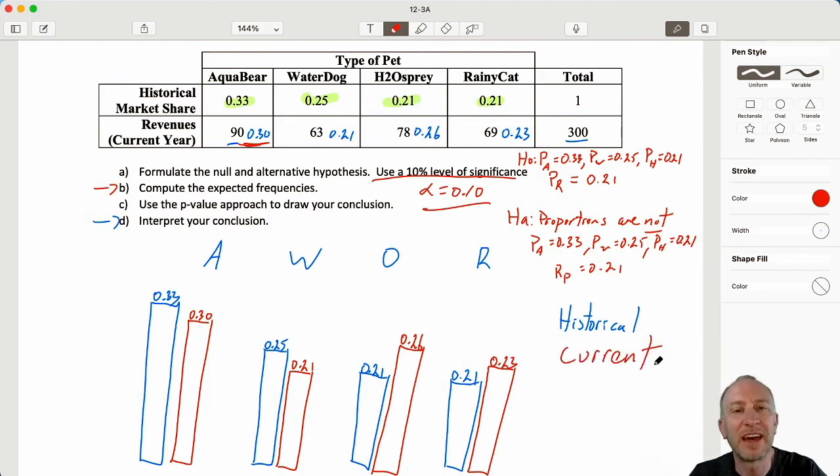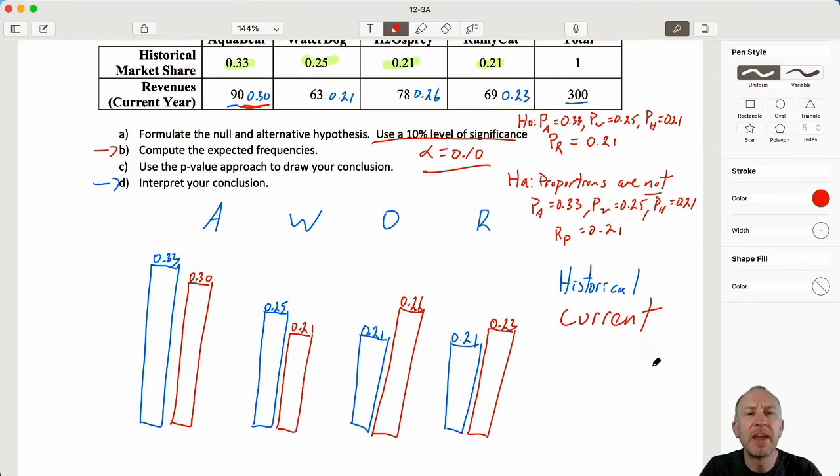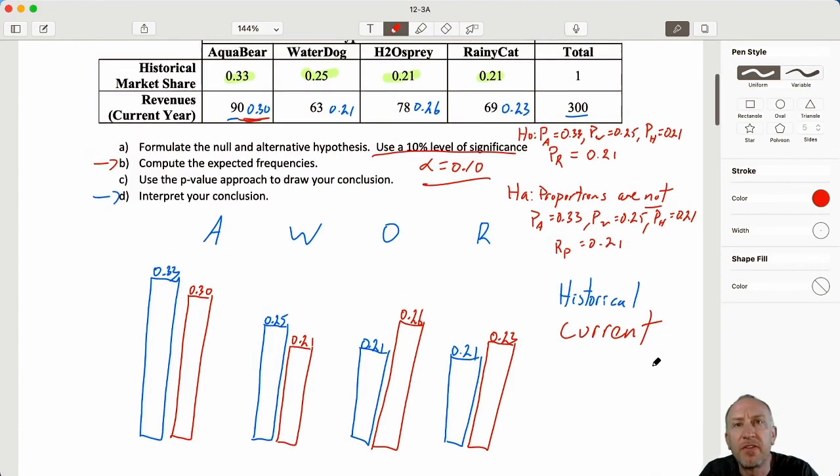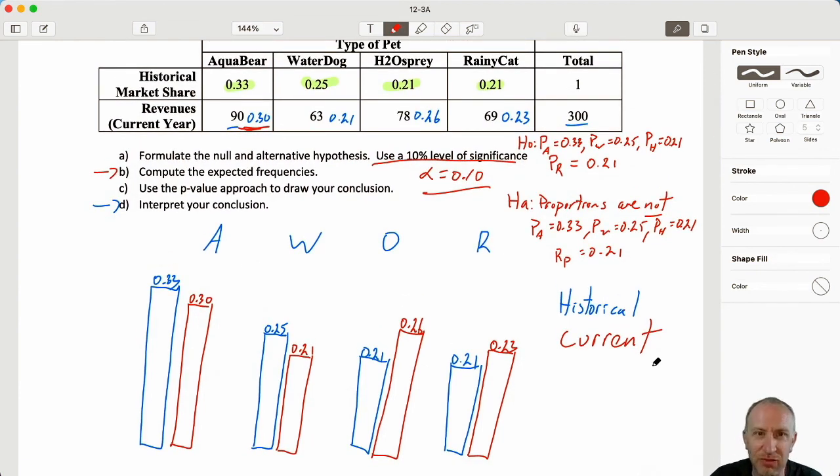So this just gives us an easy way to really see how those distributions have changed. So it looks like by introducing that new product, H2 Osprey has successfully taken market share away from both Aquabear and Water Dog. But it looks like Rainy Cat has also benefited from the introduction of that new product. So maybe there's some relationship between those products or maybe there's some similarity between that new product and something that Rainy Cat was already offering. So when H2 Osprey started to market and advertise for their product, somehow that looks like it also benefited Rainy Cat. So both Osprey and Rainy Cat benefited at the expense of Aquabear and Water Dog.